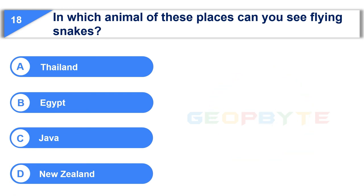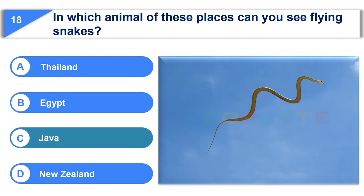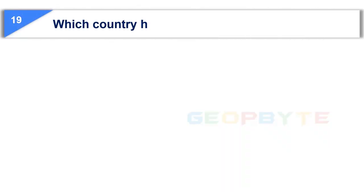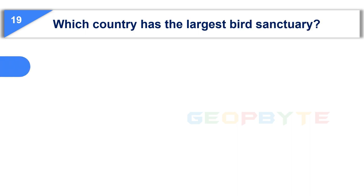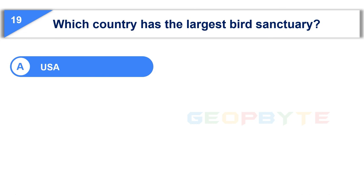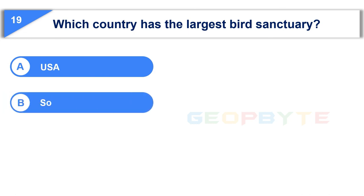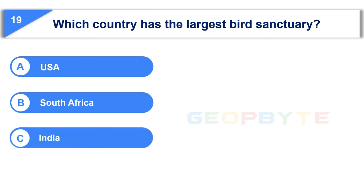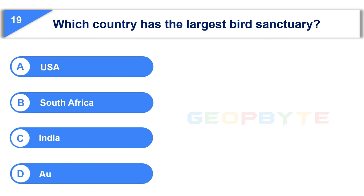Your time is up and the correct answer is Option C: Java. The 19th question is: which country has the largest bird sanctuary? Option A: USA. Option B: South Africa. Option C: India. Option D: Australia. Your time starts now.